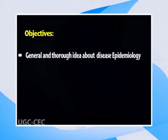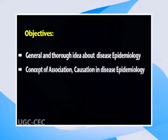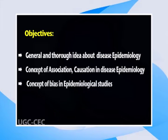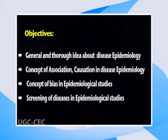Dear friends, hello and welcome. Today I am going to deliver a lecture on the concept of association, causation, bias, and screening for diseases. The main objectives of today's deliberation are: first, to give a general and thorough idea about disease epidemiology; second, explaining in detail the concept of association and causation in disease epidemiology; third, to give a general idea about the concept of bias in epidemiological studies; and finally, discussing the screening of diseases and epidemiological studies.